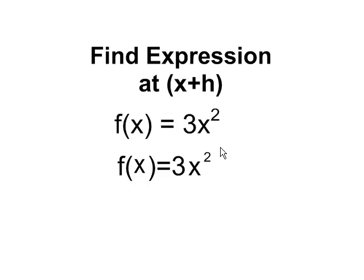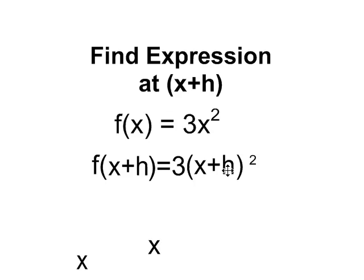So first of all, what does our expression look like when we look at f at x plus h? That just means that everywhere I see an x, I'm going to be putting in an x plus h. So f at x plus h now is actually going to be 3 times x plus h squared.